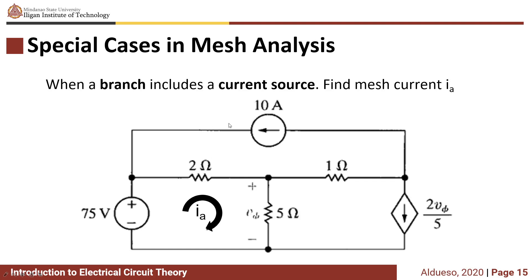For this example, find the mesh current IA. We have mesh current IA right here, and we assign mesh currents to the other two meshes. Looking at mesh IA, this mesh includes a current source in one branch — this 10A current source.